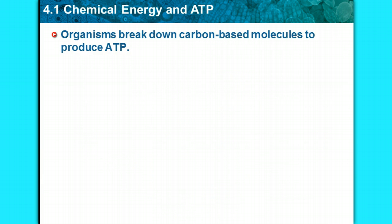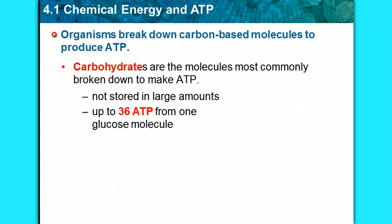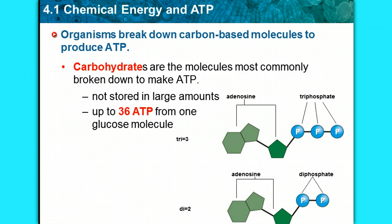Organisms break down carbon-based molecules to produce ATP. Carbohydrates are the molecules most commonly broken down to make ATP — they are the fast source of energy in your body, not stored in large amounts. You can get up to 36 molecules of ATP from just one glucose molecule.